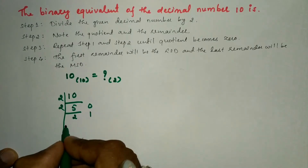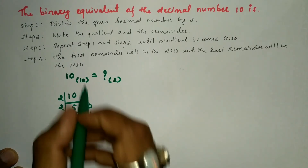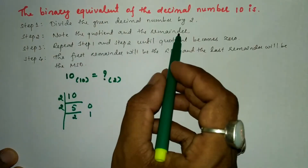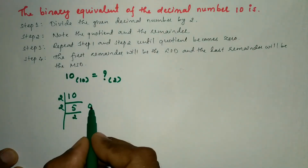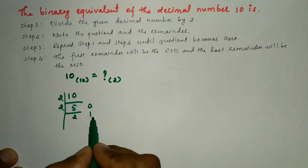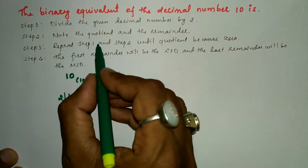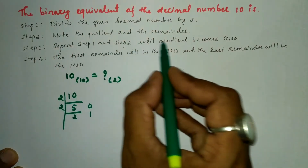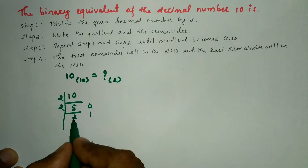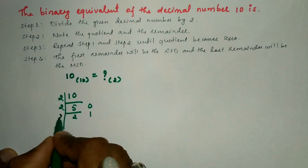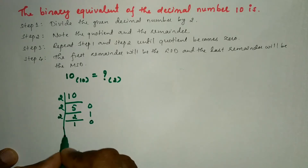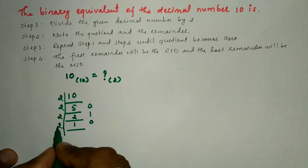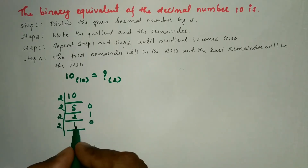As per step two, we note the quotient and remainder: quotient 5, remainder 0; quotient 2, remainder 1. We repeat steps one and two until the quotient becomes zero. Quotient is 2, so we divide again by 2: 2 ones are 2, remainder is 0, giving quotient 1.